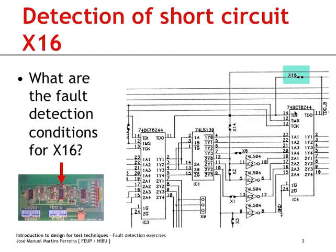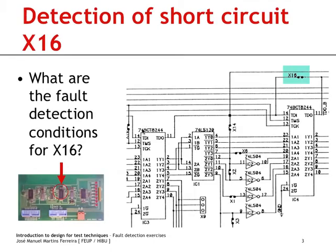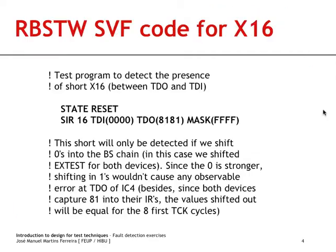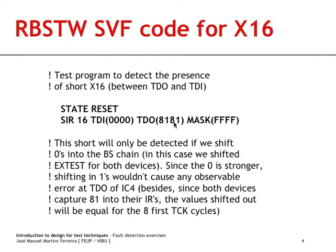We are sending 00 in hexadecimal for this device and 00 in hexadecimal for the other one, setting both devices in external test mode. We expect 8181 to come out at TDO, which is what will be captured in the instruction registers during the capture instruction register state. Since we expect 8181 from both devices, the mask word for all 16 bits is all ones — that is, FFFFF.